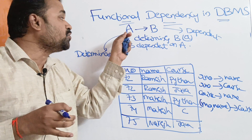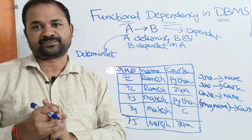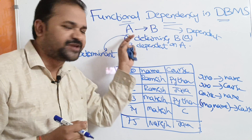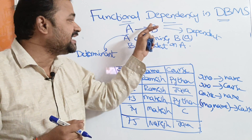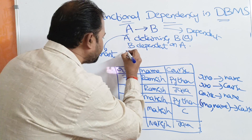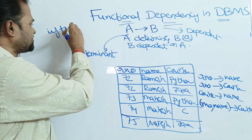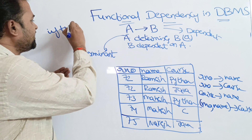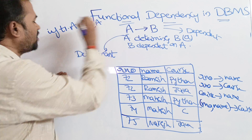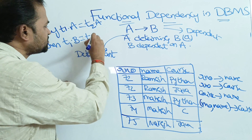We say that A determines B if each value of A determines exactly one value of B. More formally, if we take two tuples T1 and T2, and if T1.A equals T2.A, then T1.B must also equal T2.B. A tuple is simply a row in the table.